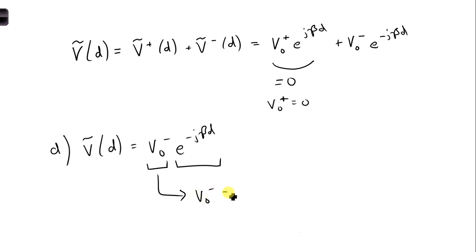So for V0 minus, we get 10 E to the 0.1 D, and then a constant phase across the entire transmission line, E to the J 0.5 pi.